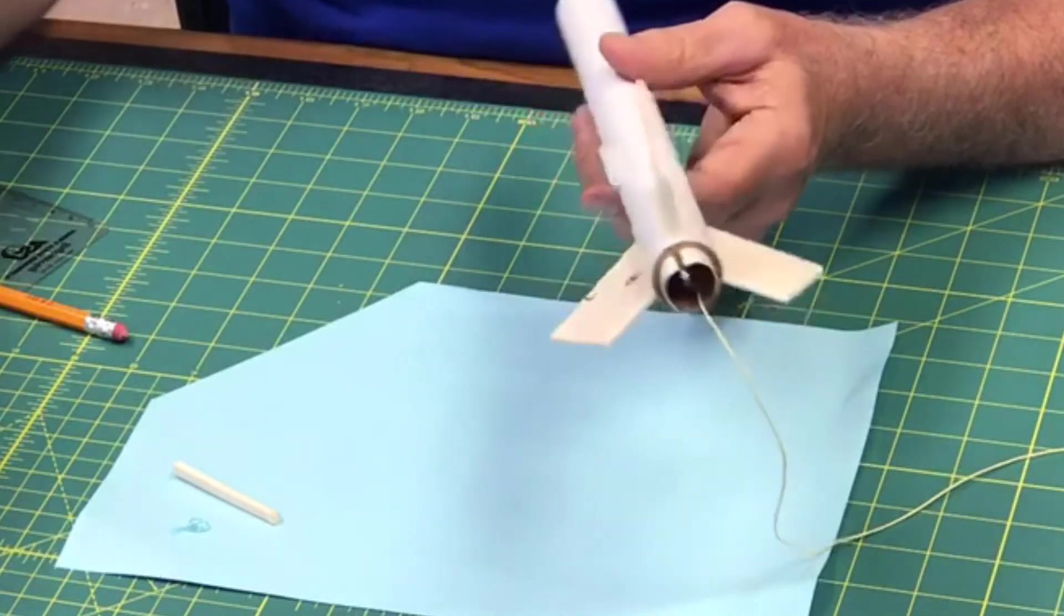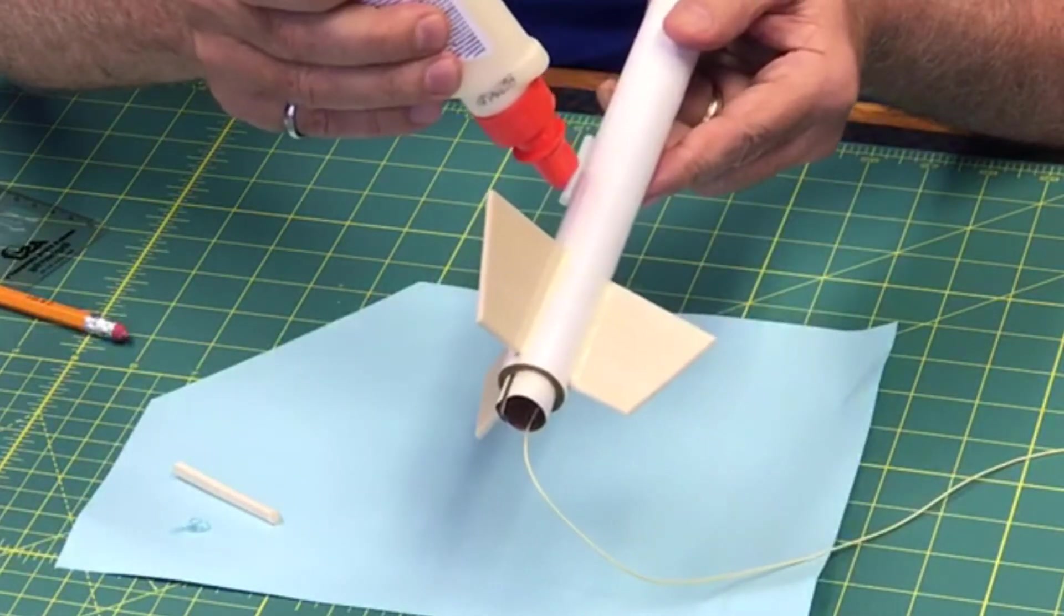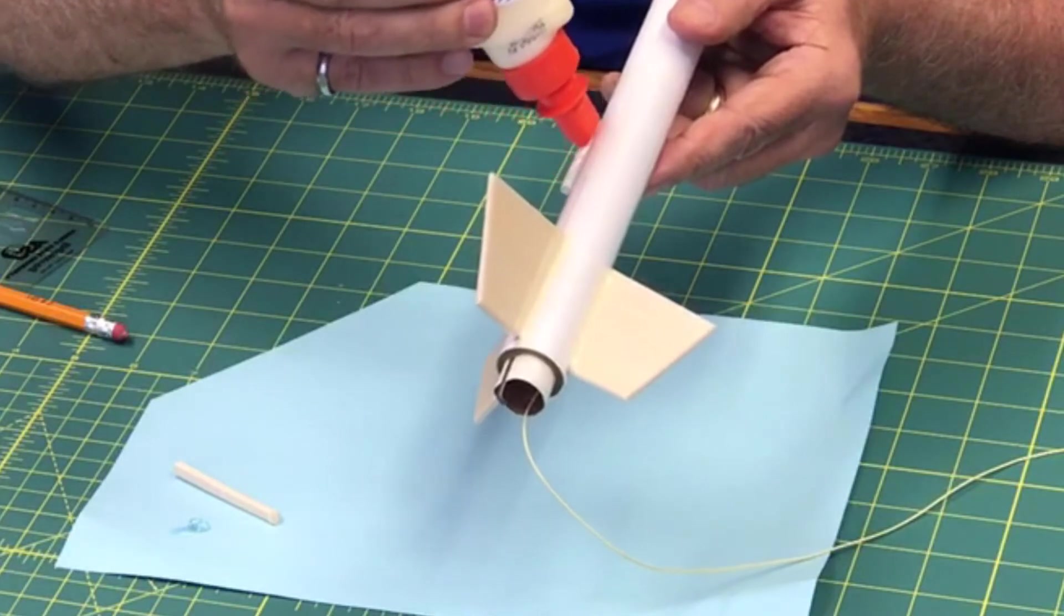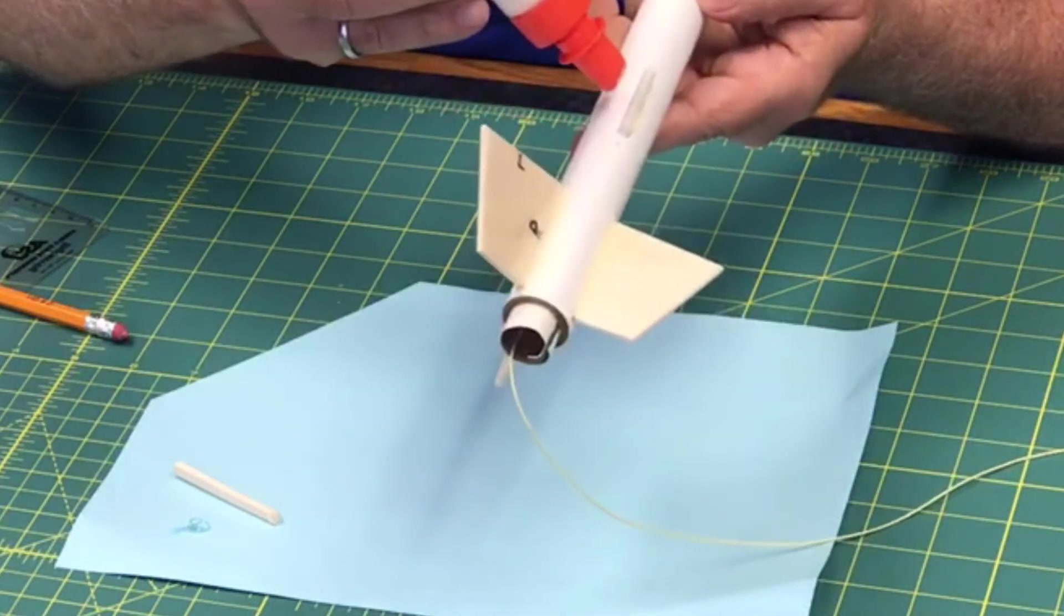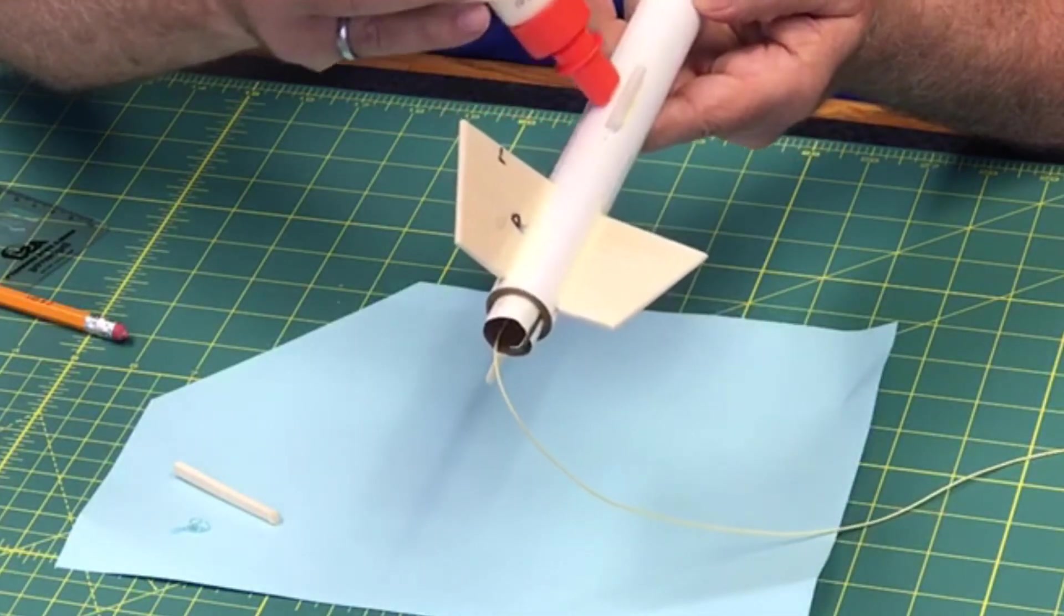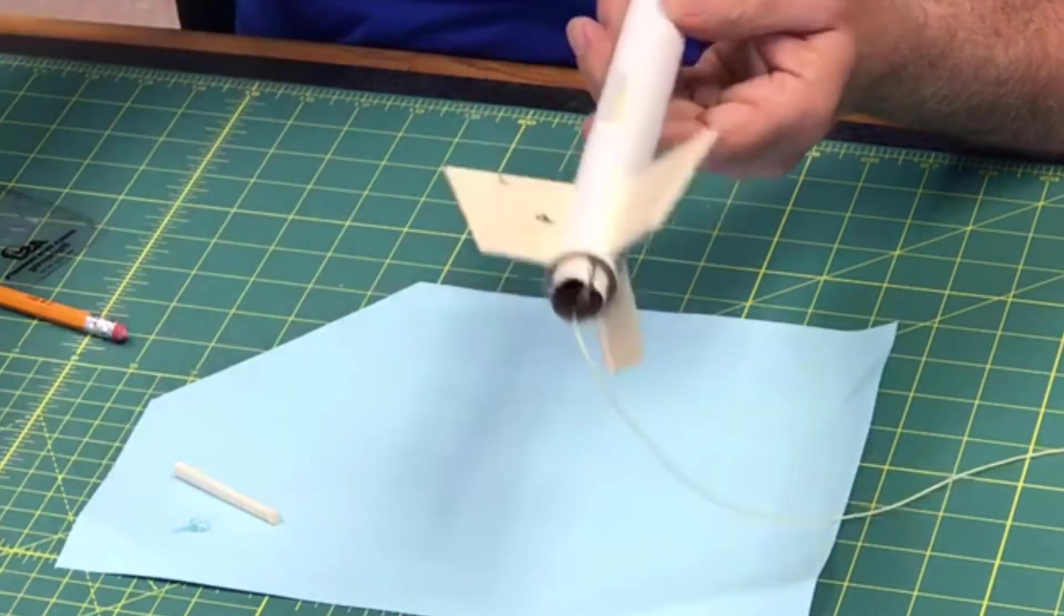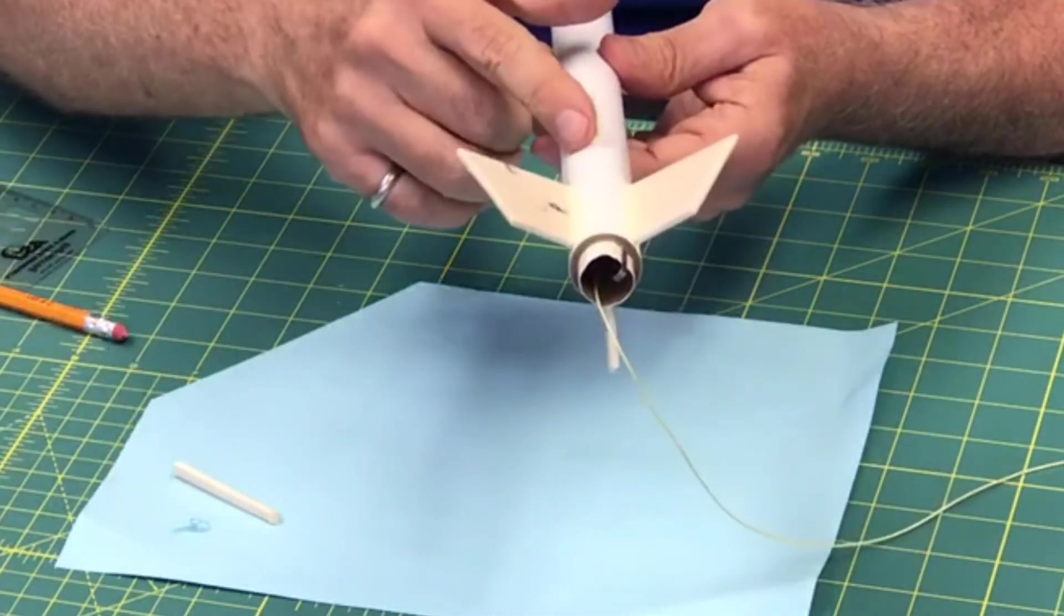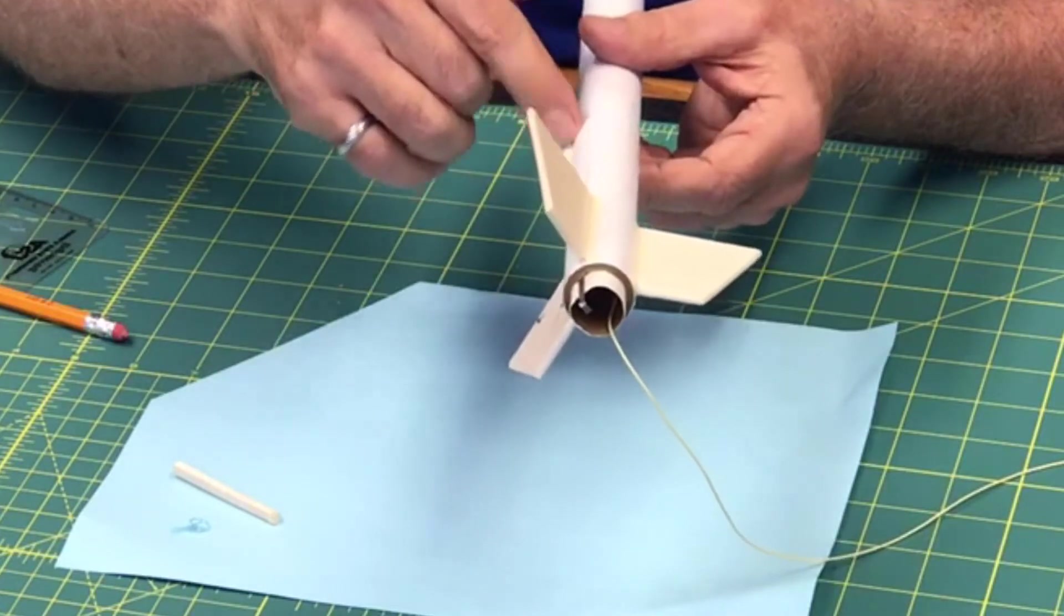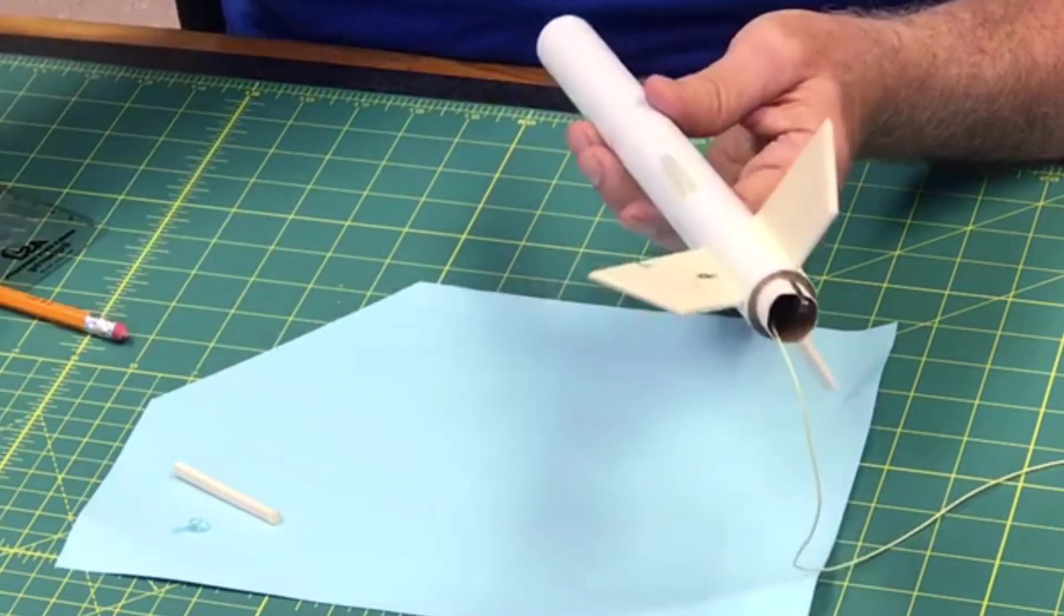And I'm going to do the same thing here with the launch lug. I'm going to put a nice fillet on the launch lug, put one on each side. Great, I'm going to set these off to dry.